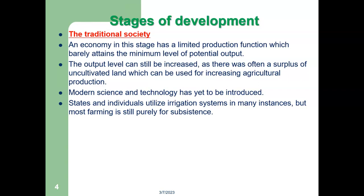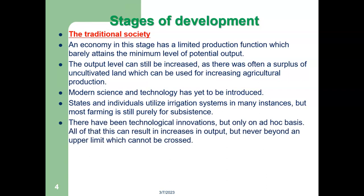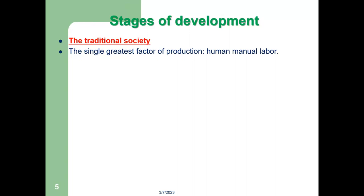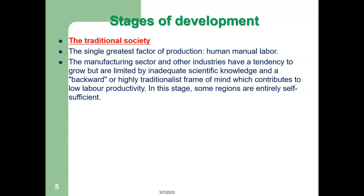There have been technological innovations, but only on an ad hoc basis. This can result in increases in output, but never beyond an upper limit which cannot be crossed. Trade is predominantly regional and local, largely done through a barter system, and the monetary system is not well developed. Investment share never exceeds 5% of total economic production. The single greatest factor of production in traditional society is human manual labor. The manufacturing sector and other industries have a tendency to grow but are limited by inadequate scientific knowledge and a backward or highly traditionalist frame of mind, which contributes to lower productivity.